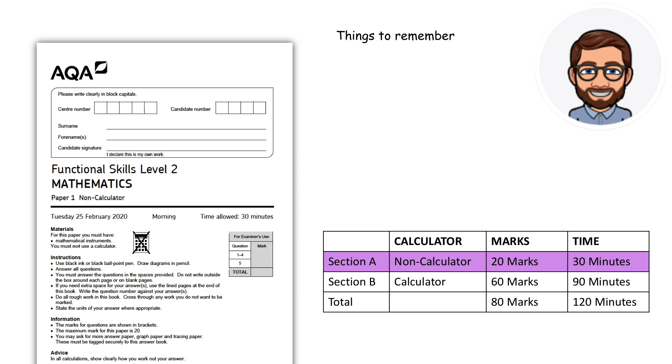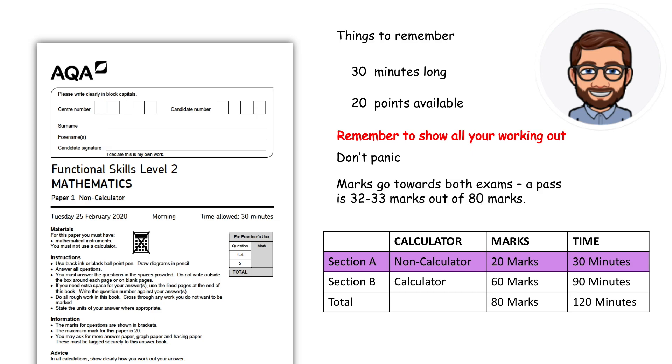Things to remember: The exam is 30 minutes long. There are 20 points available for this exam. Remember to show all your working out. And don't panic. If you don't know the answer to a question, just move on and you should have time at the end of the exam to have a go at it. Marks go towards both exams. A pass is 32 to 33 marks out of 80, so you don't have to get all of them on this paper. You can pick some up on the calculator paper.